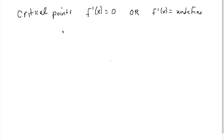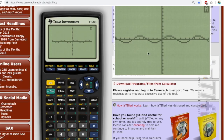Let's try one more function. Let's think about f of x equals sine of x, and we want to find the critical points for this function. The first thing we'd like to do is look at a graph of sine of x. When we look at this function, it looks like there's going to be a bunch of critical points, because there are a lot of places where the tangent line would have a slope of 0 — like here, here, here, here, and here, and so on.